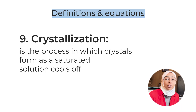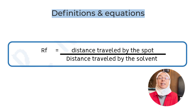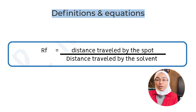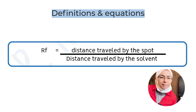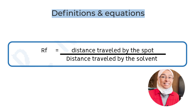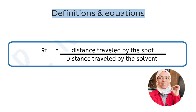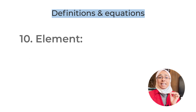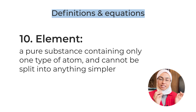One item that's not a definition but a calculation you should know is the Rf value — a chromatography experiment. The Rf value is the distance traveled by the spot divided by the distance traveled by the solvent. They may ask you to write the calculation or to calculate it yourself.